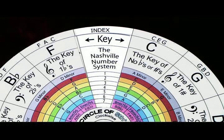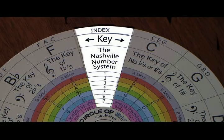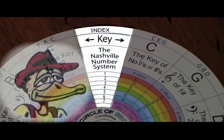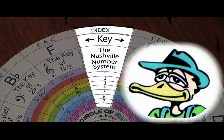The Nashville number system scenario. The special guest star says to the band: 'It's a standard 12 bar in G, but add a 2 on the bridge, kick it off from the 5, hit the 4 on the way down into the 1, and watch me for the 2 on the bridge.' Say what?